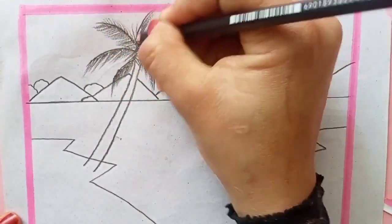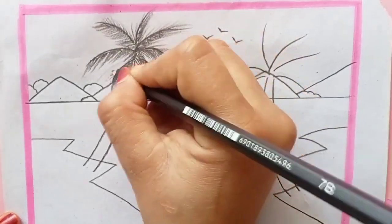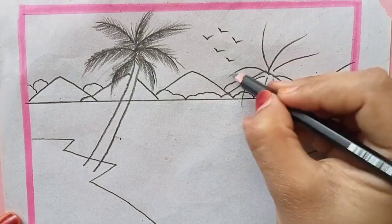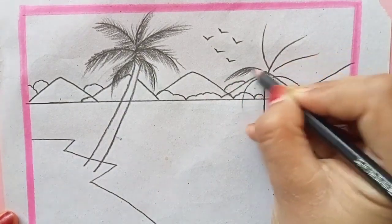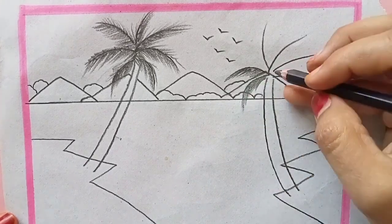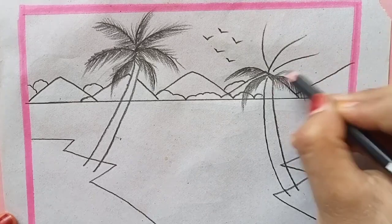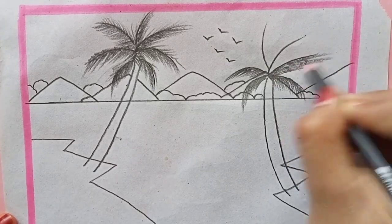Now shading the tree barks by holding the pencil horizontally, just like this. And now shading the lower part of the trees, drawing the brinks, and shading the mountain and the river.